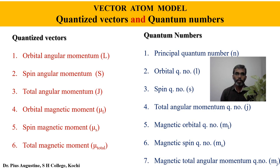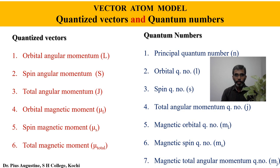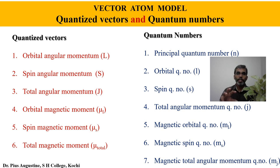These are quantized vectors and quantum numbers, which make this atom model a higher-order quantum atom model. The vector atom model is a quantum atom model. The list of quantized vectors includes: orbital angular momentum, spin angular momentum, and total angular momentum; orbital magnetic moment, spin magnetic moment, and total magnetic moment. Similarly, the quantum numbers are: principal quantum number n, orbital quantum number l, spin quantum number s, total angular momentum quantum number j, magnetic orbital quantum number m-subscript-l, magnetic spin quantum number m-subscript-s, and magnetic total angular momentum quantum number mj. These are the parameters which describe this vector atom model, and we will be analyzing each of these quantized vectors and quantum numbers one by one.